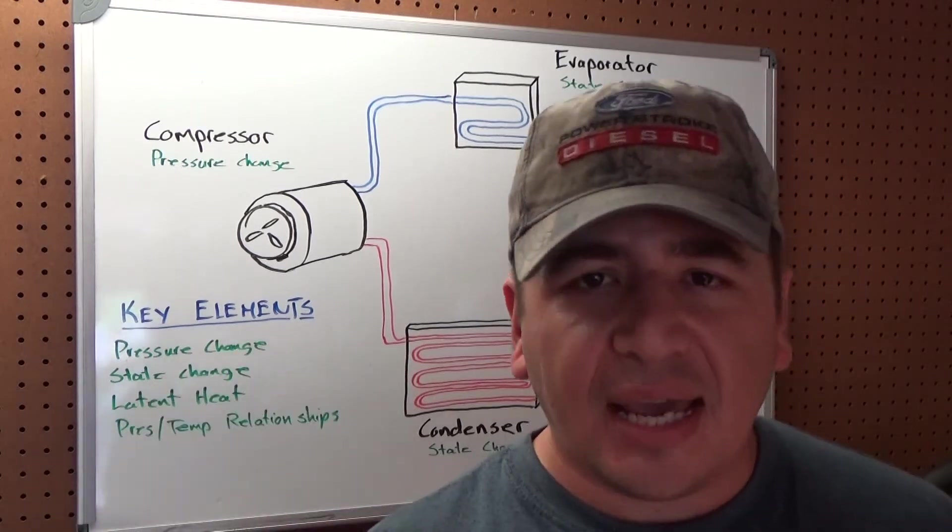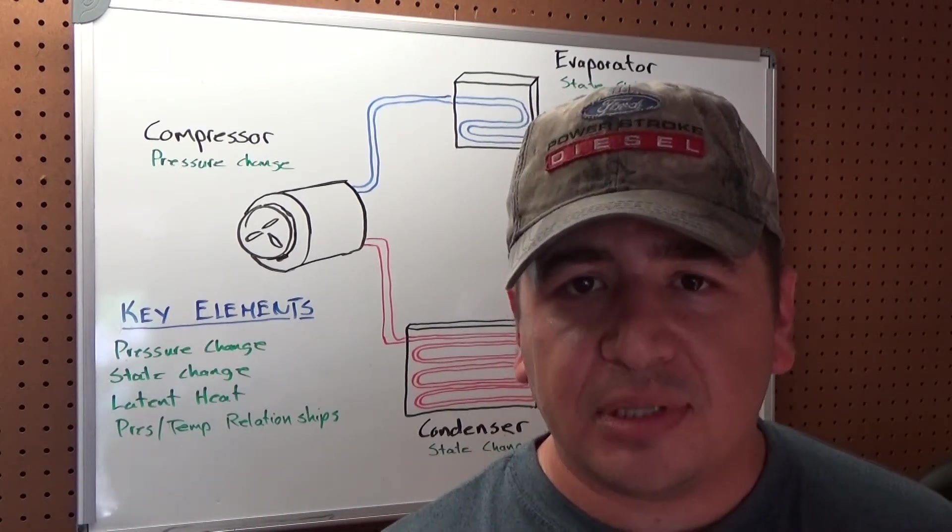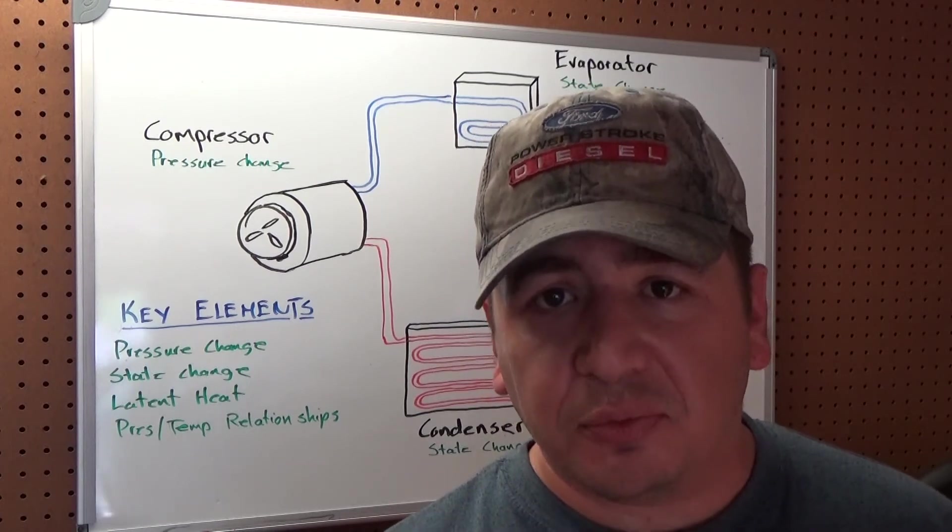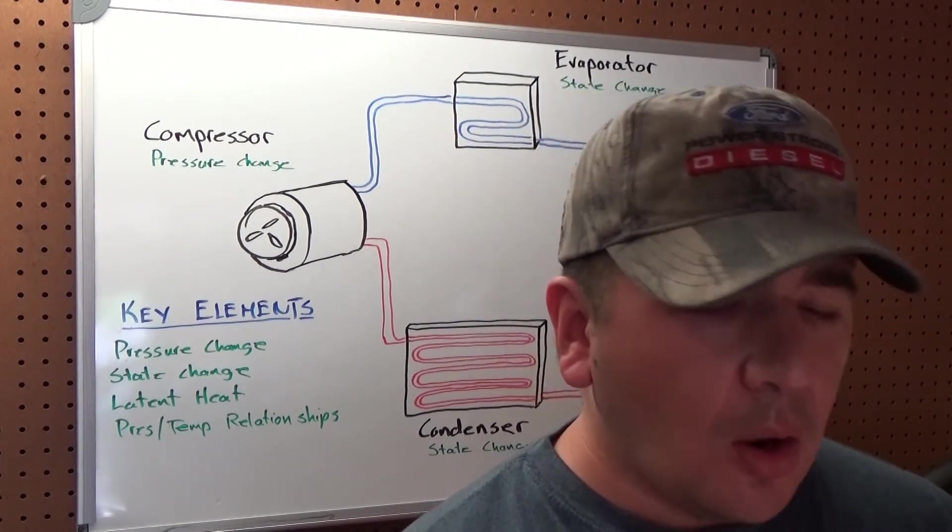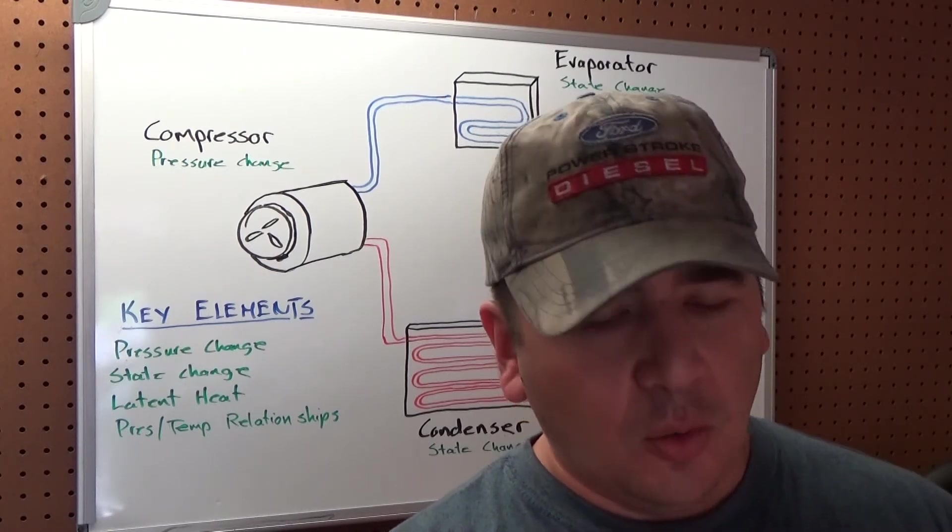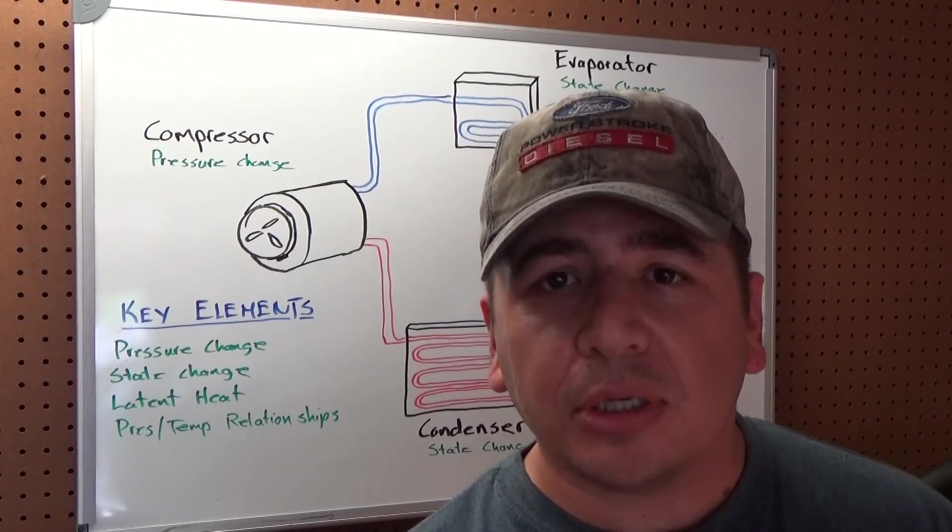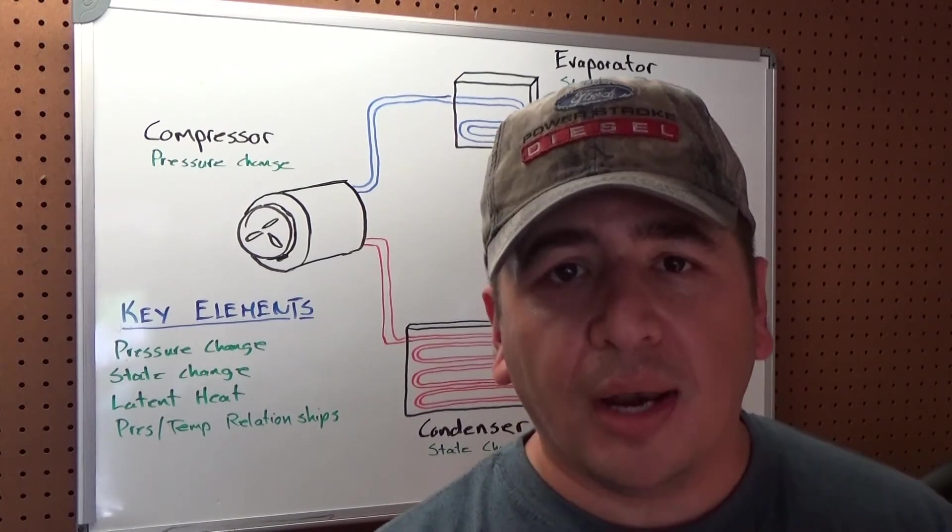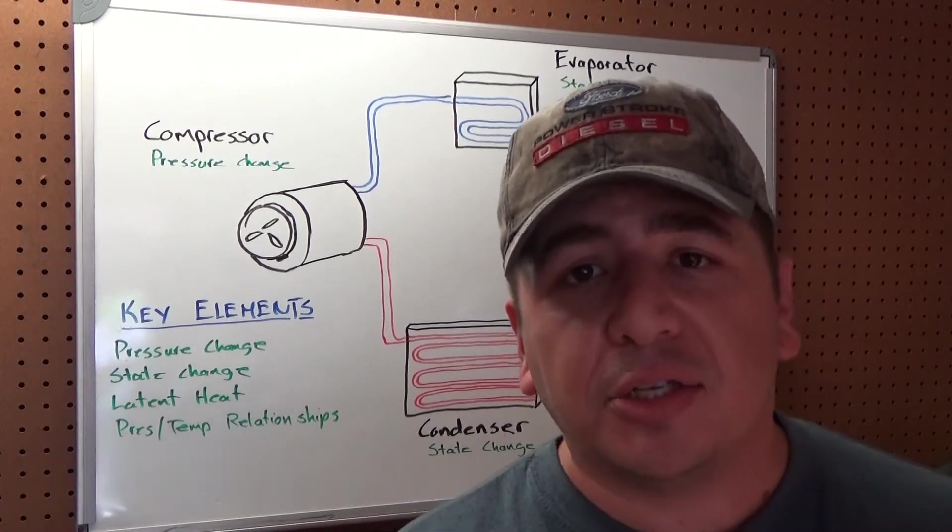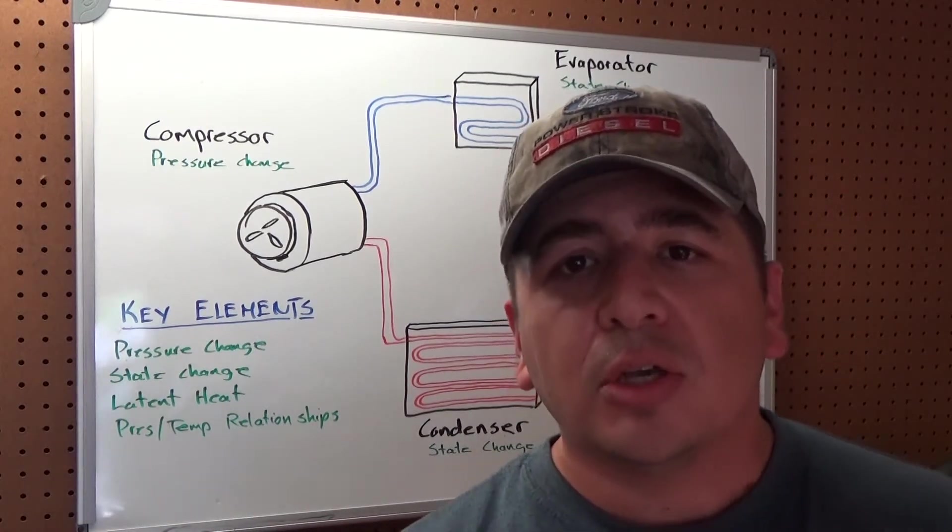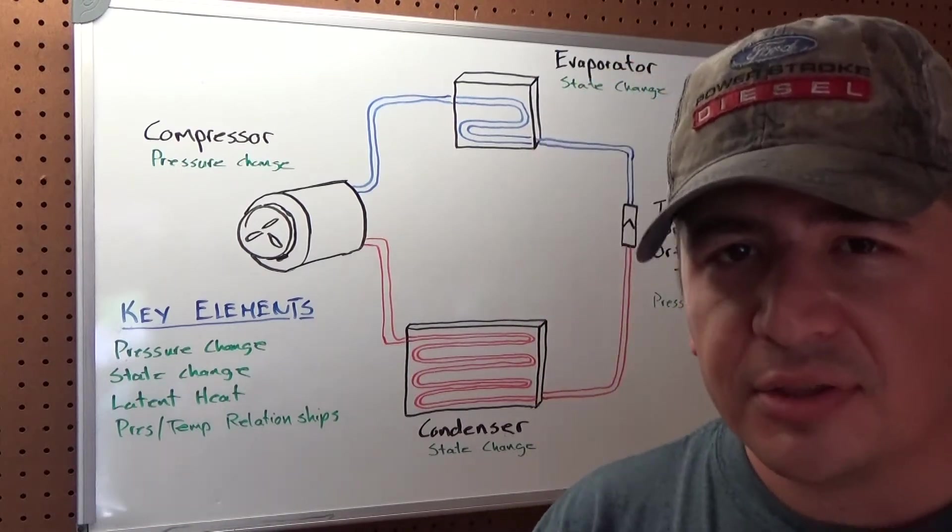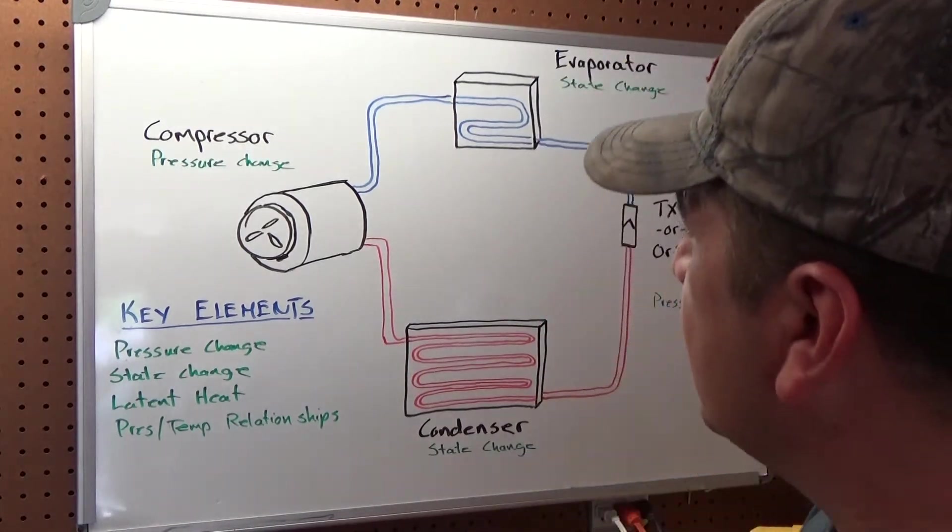So, this has to add a couple extra steps and take advantage of a couple extra functions of physics, basically. So, what you need to understand for this is what latent heat is, how pressure-temperature relationships work, and what happens when you change pressure and change states with this refrigerant. So, let's start at the compressor and work our way through the system, and I think you guys are going to understand this.